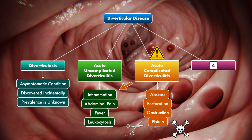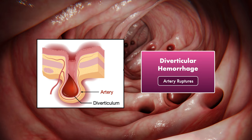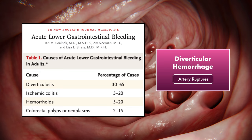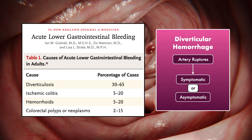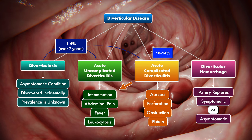Last but not least, we have diverticular hemorrhage. This is when an artery in a diverticulum ruptures. It's been cited in the New England Journal of Medicine as the leading cause of lower gastrointestinal bleeding in the United States, and it can be symptomatic or asymptomatic. The available literature suggests that only 1–4% of people with diverticulosis will experience complications over a span of 7 years, and between 10–14% of all acute diverticulitis cases are complicated.